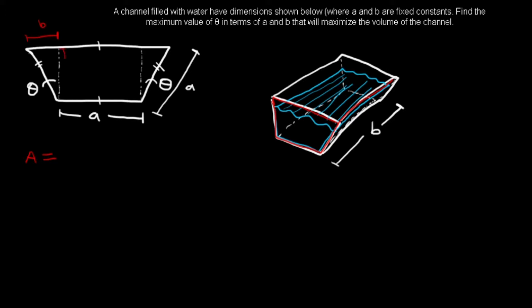So now we've got variables A, C, and theta. We already used B for the depth, so let's call the triangle base D. We know that both triangles have base D and height C, since they're symmetric with the same angle theta and the same hypotenuse.